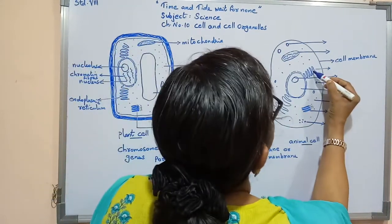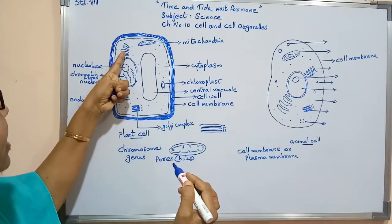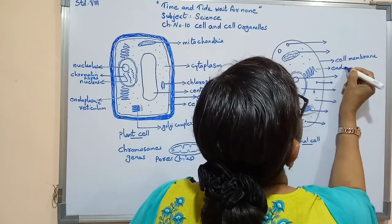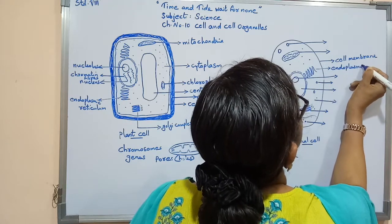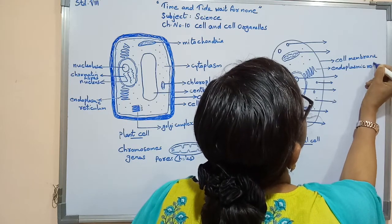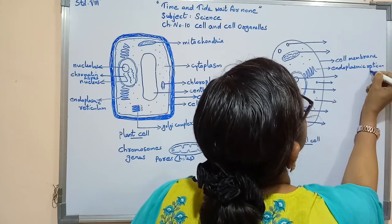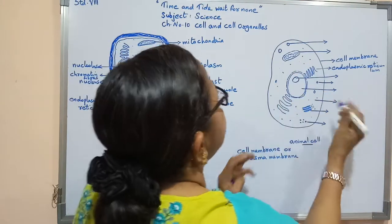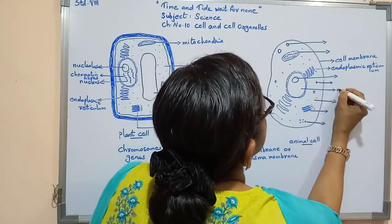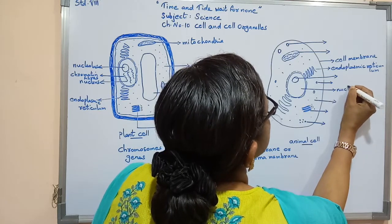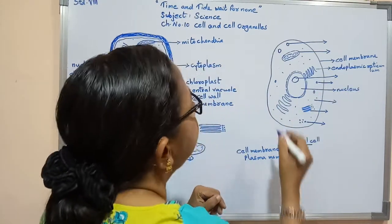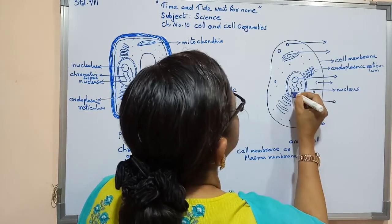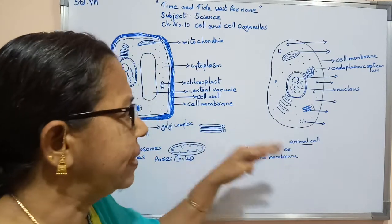Inside the animal cell we can also find the endoplasmic reticulum, which we have already studied. This is the nucleus. Inside the nucleus, chromatin fibers will be present up until the time of cell division.